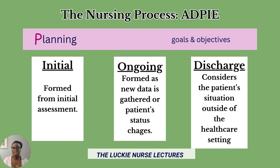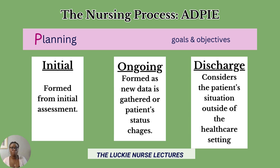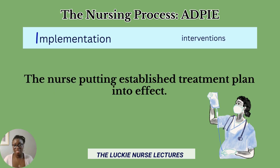The final plan of care is typically the discharge plan, which takes into account the patient's situation outside of the current healthcare setting. If the patient is being discharged to home, the care plan should be catered to how they will be able to care for themselves and perform activities of daily living at home. The next stage is implementation — the nurse actually putting the established treatment plan into effect.